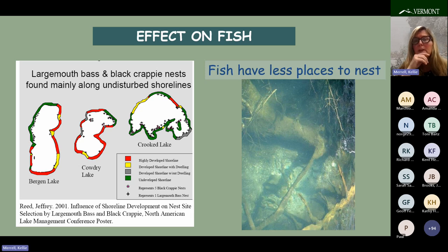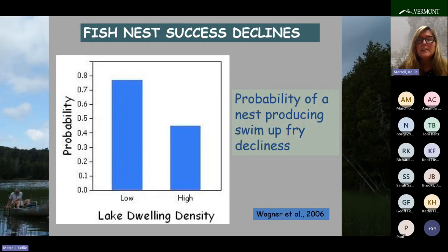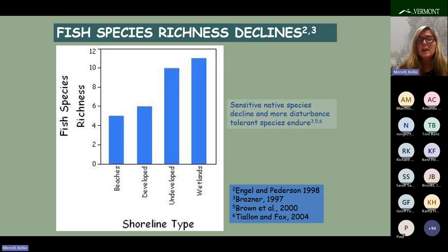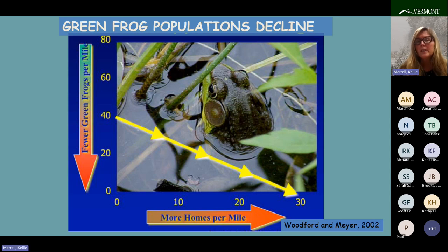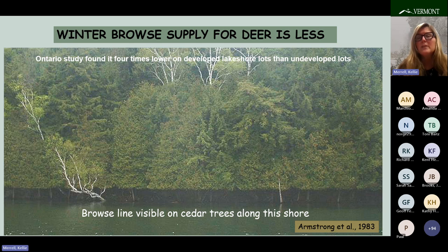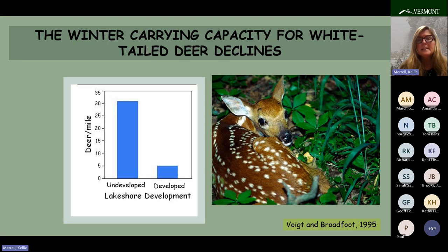A study by Reed in 2001 showed that bass choose undeveloped sites to nest. Another study found fish nests on lakes with denser development were less likely to produce swim-up fry. A 1992 study found that the diversity and abundance of fish declined with development, and another found that the diversity of fish off developed lakeshore was less than off undeveloped shores. A Wisconsin study showed that green frog abundance declines with increased homes per mile, and two other studies found that dragonflies decrease with poor development practices — dragonflies eat mosquitoes as adults and are food for fish when living in the lake.